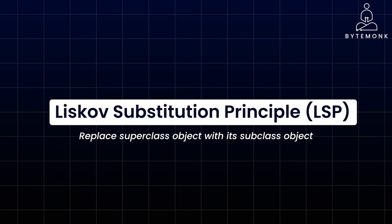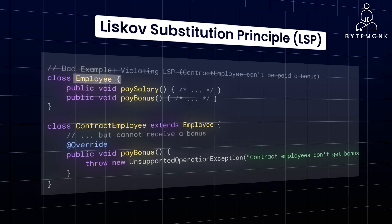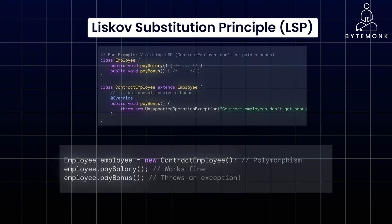Liskov Substitution Principle, or LSP. The idea is that objects of a superclass should be replaceable with objects of its subclasses without affecting the correctness of the program. In this scenario, the Employee class establishes a contract that includes both paying salary and paying a bonus. However, the ContractEmployee subclass breaks this contract by overriding PayBonus to throw an exception. This violates LSP because ContractEmployee cannot be substituted for Employee without causing unexpected behavior.